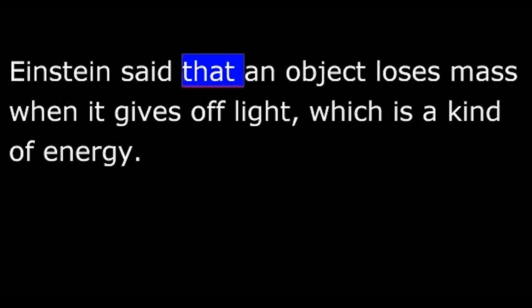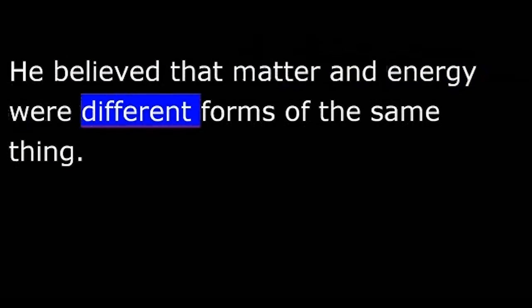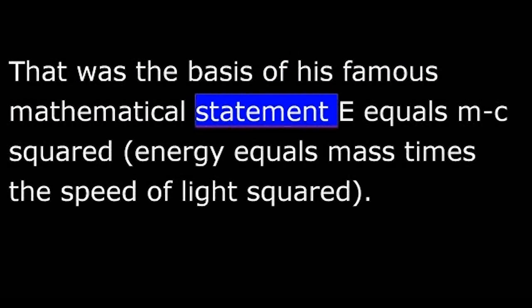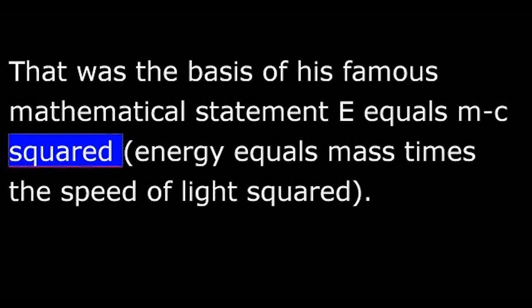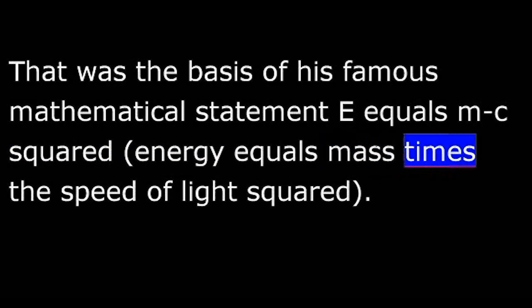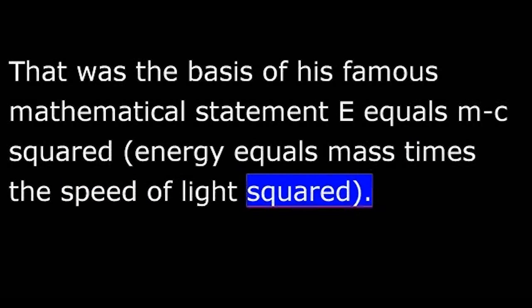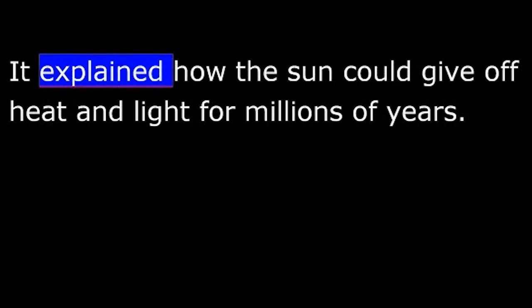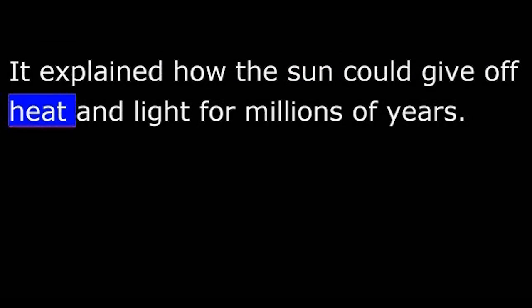Einstein said that an object loses mass when it gives off light, which is a kind of energy. He believed that matter and energy were different forms of the same thing. That was the basis of his famous mathematical statement, E equals mc squared. Energy equals mass times the speed of light squared. This statement or formula explained that a great amount of energy could come from a small piece of matter. It explained how the sun could give off heat and light for millions of years. This formula also led to the discovery of atomic energy.